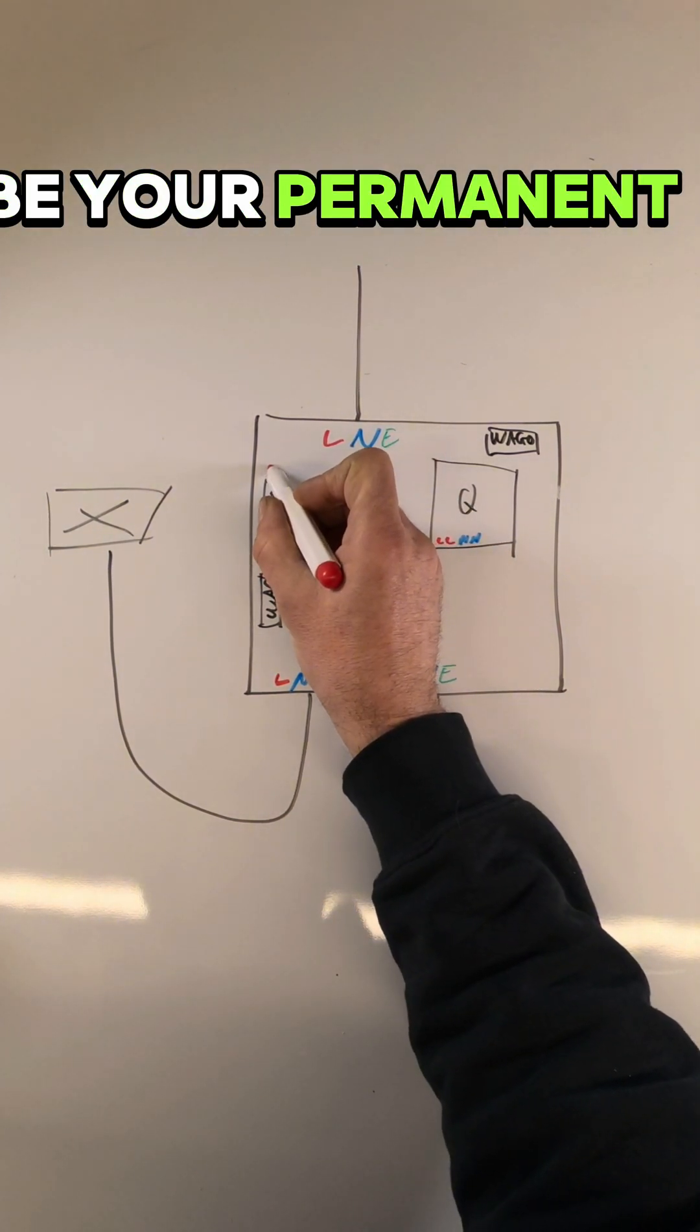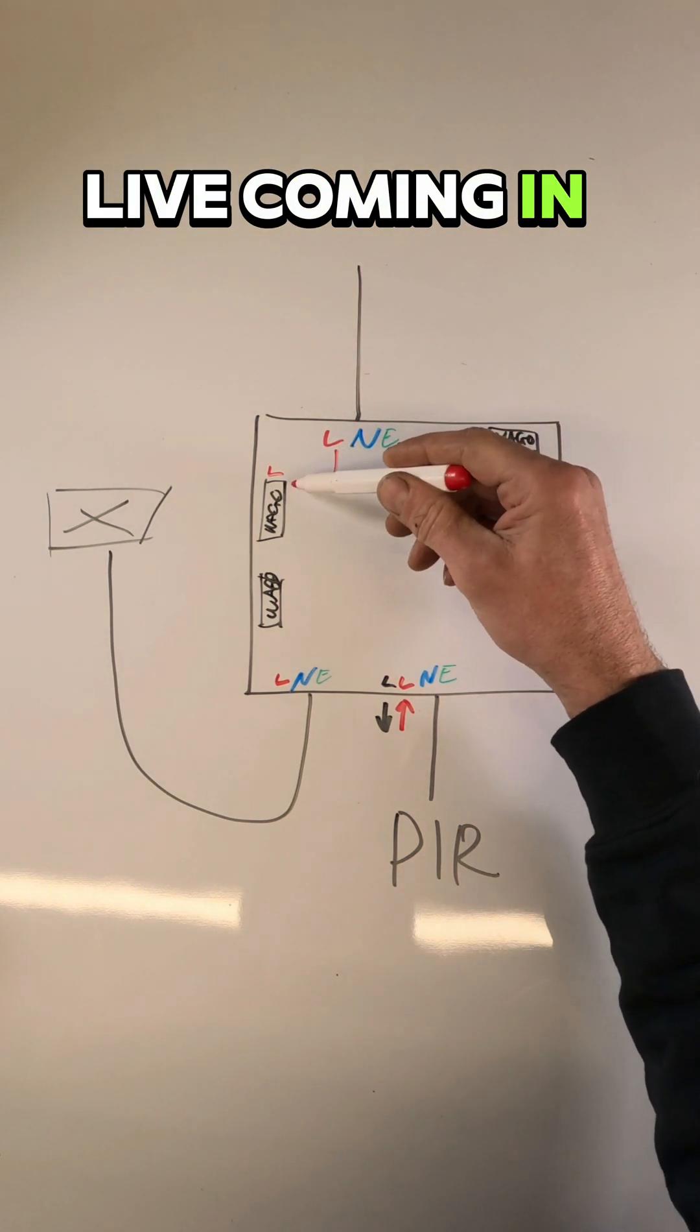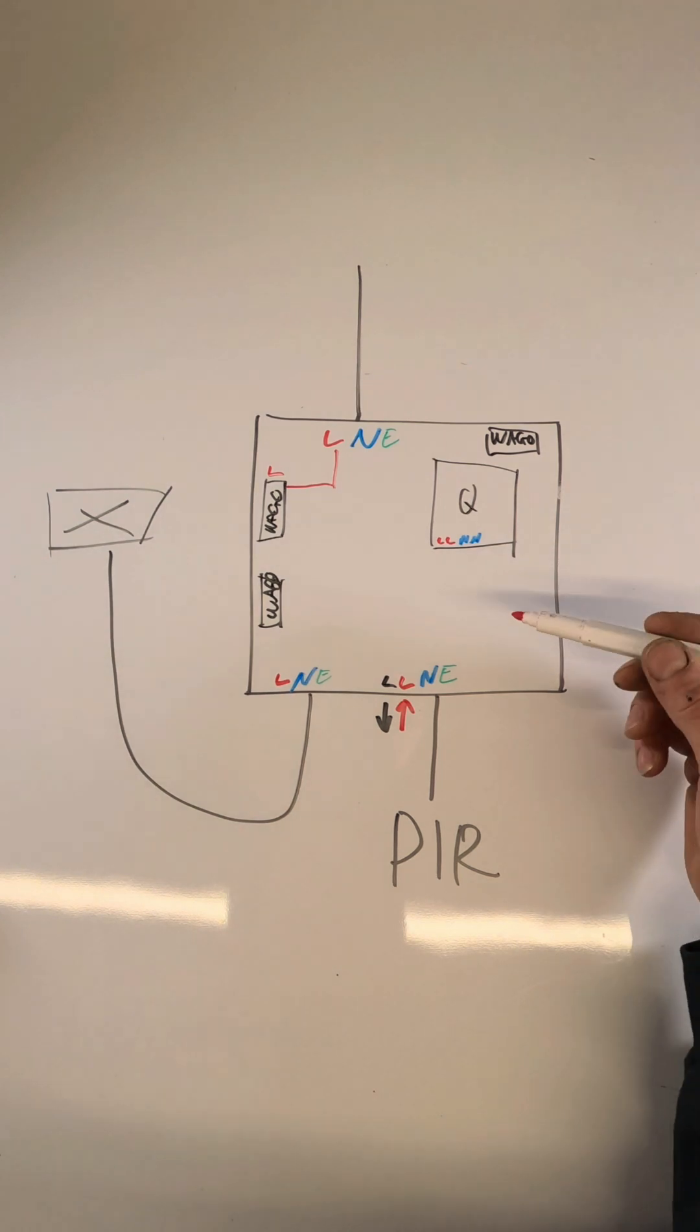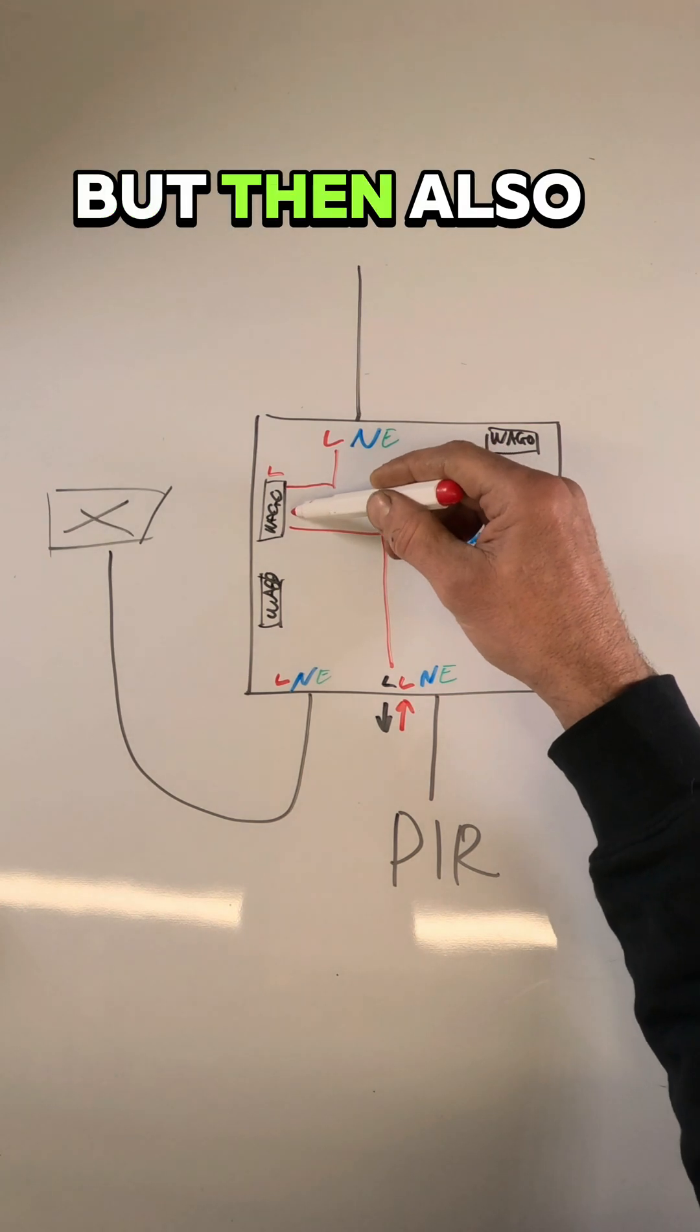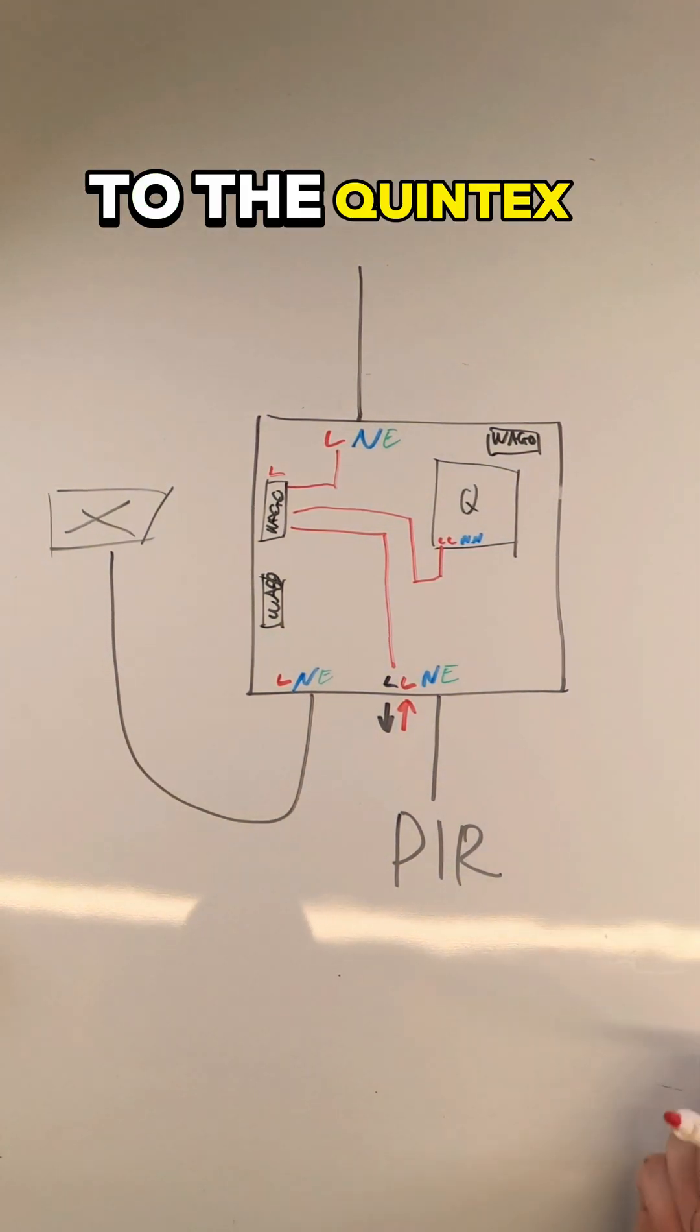So this will be your permanent live Wago. What we wanted was a live coming in to go to that Wago, then also come in and go to PIR, but then also we wanted it to go to the Quintic switch.